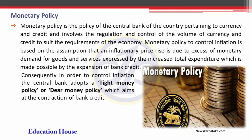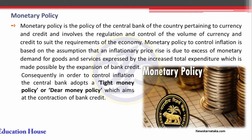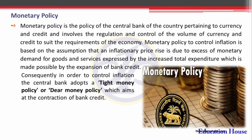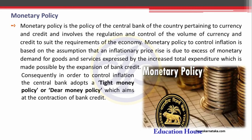So automatically, loans are reduced and the supply of money gets contracted from the market. This type of policy is considered as a tight money policy or dear money policy, which has the main intention to control or bring about contraction of bank credit. Indeed, if bank credit reduces, automatically the supply of money reduces.